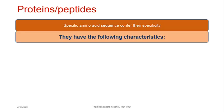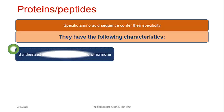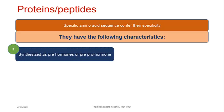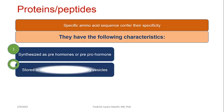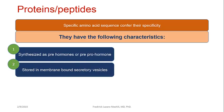Protein or peptide hormones have the following characteristics. First, they are synthesized as pre-hormones or pre-pro-hormones — meaning they are synthesized as inactive hormones. Understanding this group characteristic can tell a lot about individual hormones that belong to this group. Second, they are stored in membrane-bound secretory vesicles.